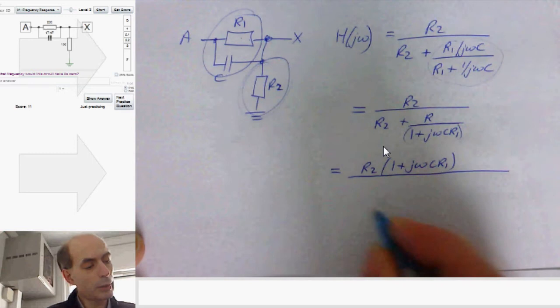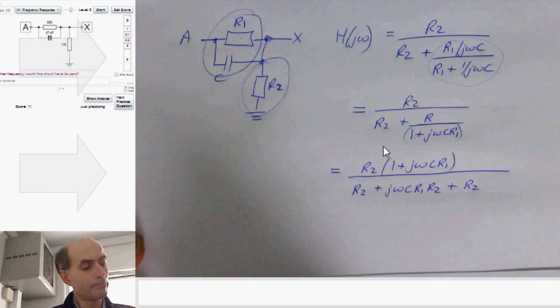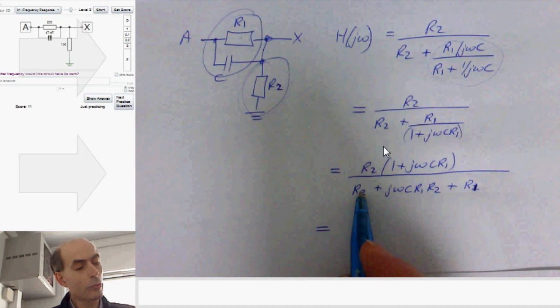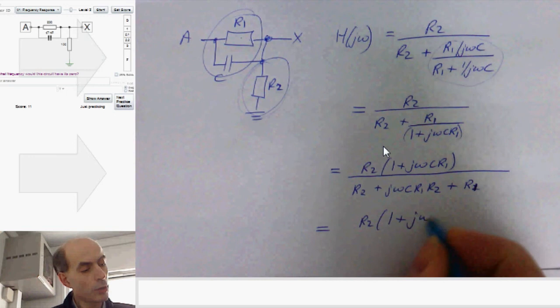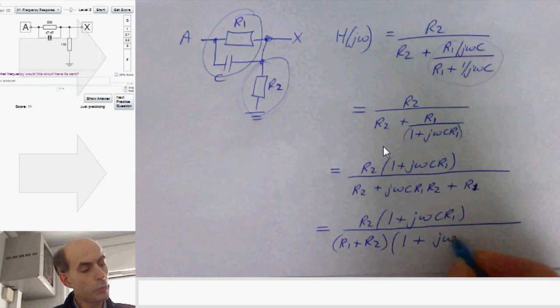And that would give me R2 1 plus j omega c R1 on the top, divided by R2 plus j omega c R1 R2 plus R2 on the bottom. And if I extract the R1 and R2 from the bottom here, I could write that as R2 1 plus j omega c R1, divided by R1 plus R2 over R1 plus R2.